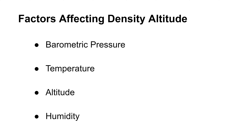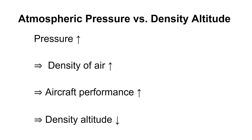Let's go over the four main factors that affect density altitude and aircraft performance. For the FAA Part 107 exam, you do not have to know exact formulas, only the relationship between density altitude and the factors that affect it. The first is atmospheric pressure. You need to remember that atmospheric pressure is directly related to the performance of an aircraft and inversely related to the density altitude. When pressure is greater than on the standard day — 29.92 inches of mercury or 1013.2 millibars — there are more air molecules in a given volume, meaning air density goes up. Thus, higher pressure means increased aircraft performance and decreased density altitude.